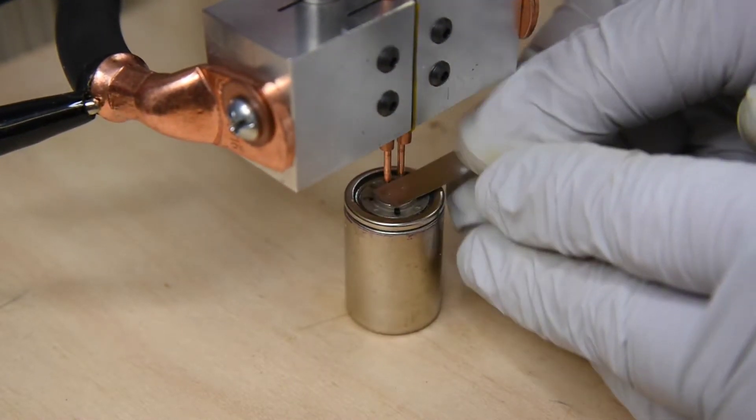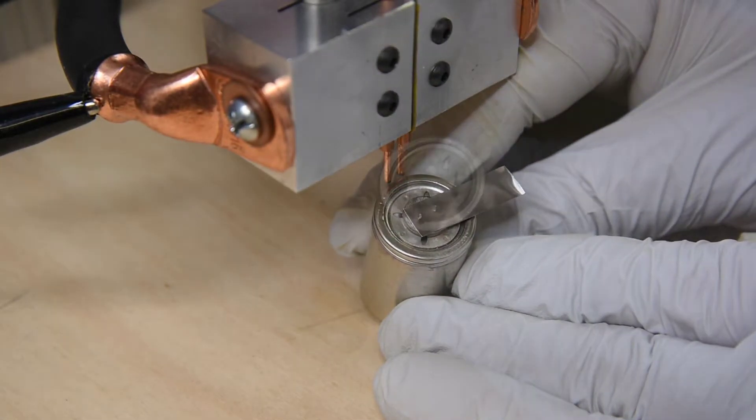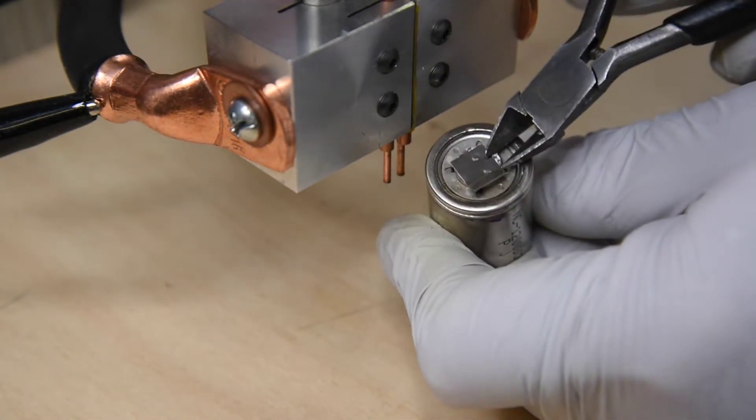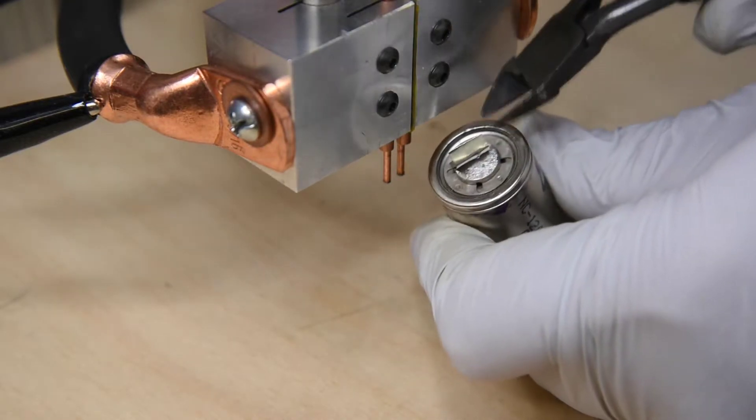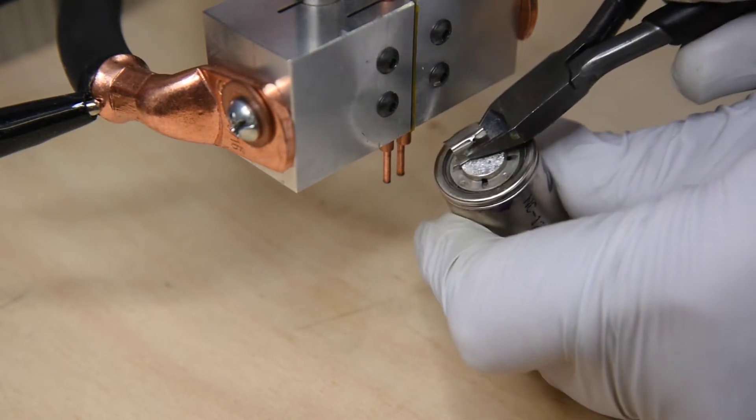Now when we drop down to about 75 joules, it still seems to be a moderately strong weld, but the size of the weld nuggets do get noticeably smaller. This I feel would still be an acceptable weld.